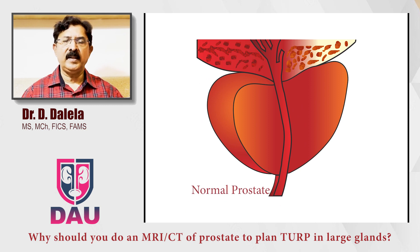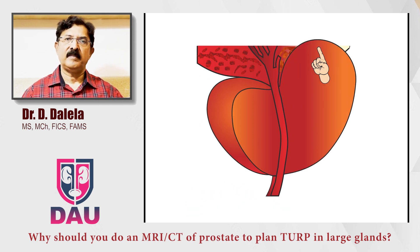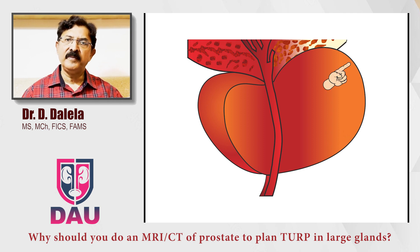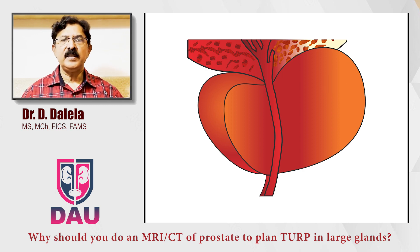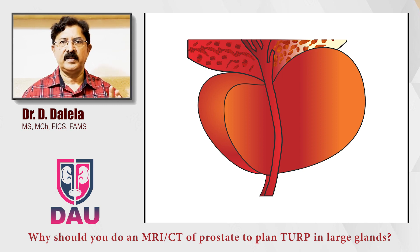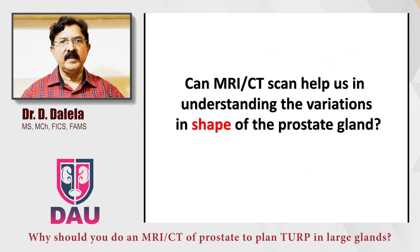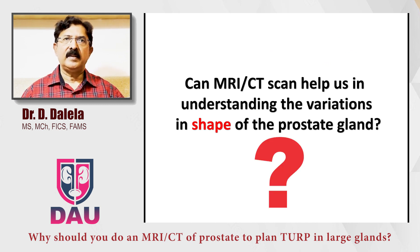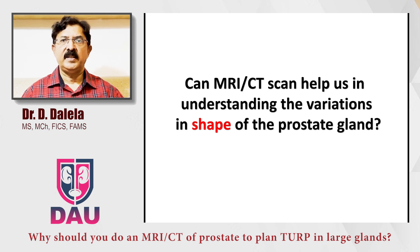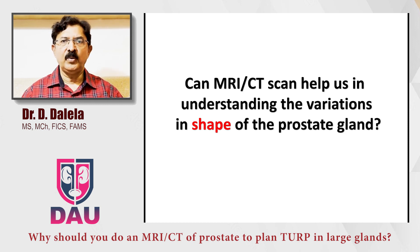A normal prostate may grow in the posterior part more into the bladder, creating what is known as intravesical protrusion, or the gland may grow more peripherally like a pumpkin and not creating any intravesical protrusion. This kind of differential growth of BPH within a single prostate is a common phenomenon when you have it larger than 70 cc in volume. So my submission to you is: can an MRI or CT help us in knowing this differential pattern of growth, or in other words, the shape of the prostate gland prior to doing a TURP?